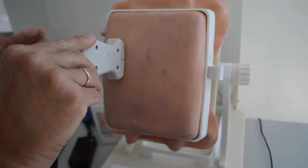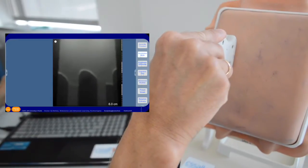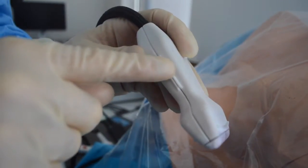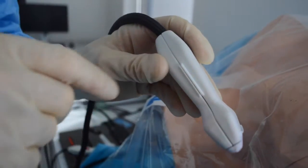Once you place the probe on the simulator, you will see the ultrasound image pop up on the computer screen. Notice that the orientation marker is in the top left corner of the ultrasound image. This orientation marker corresponds to the orientation marker on the ultrasound probe.